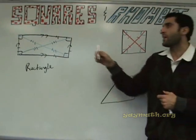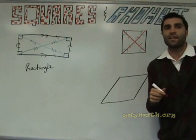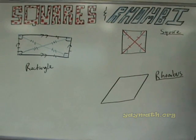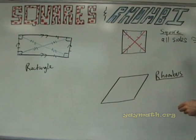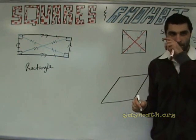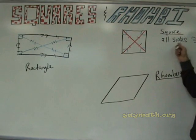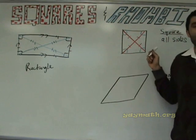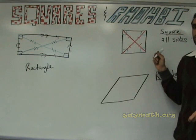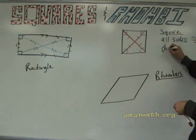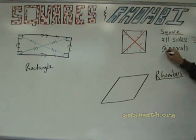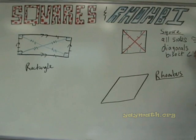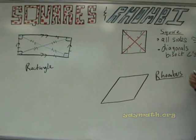Now, what are the differences between the rectangle and the square? In the square, all sides are congruent — but all sides are NOT congruent in the rectangle. What's another difference? In the square, the diagonals bisect the angles. Diagonals bisect angles — jot that down.